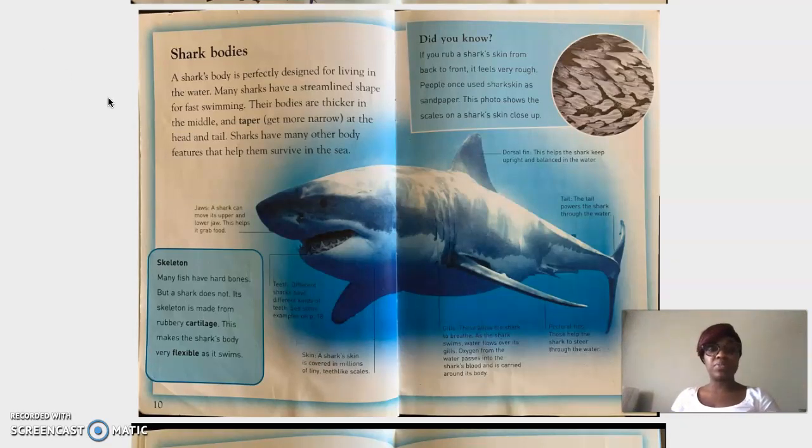Shark bodies. A shark's body is perfectly designed for living in the water. That means their bodies made for water, right? And living in there. Many sharks have a streamlined shape for fast swimming. Their bodies are thicker in the middle and taper get more narrow at the head and tail.